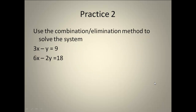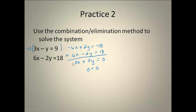Here's another practice problem. Use the combination elimination method to solve the system — go ahead and pause the video and see what you come up with. This one might have turned out a little strange. I chose to get the x's to be the same, so I multiplied the top equation by negative 2 and got negative 6x plus 2y equals negative 18. Then I added my equations together, and when that happened, my x's were eliminated, my y's were eliminated, so I had 0x plus 0y, which is just 0, and negative 18 plus 18 is 0. So I ended up with 0 equals 0. I have no variables left. This is going to happen sometimes, and when it does, we have a special situation.